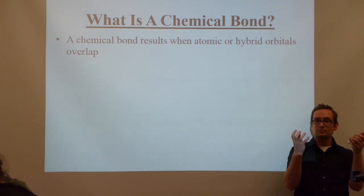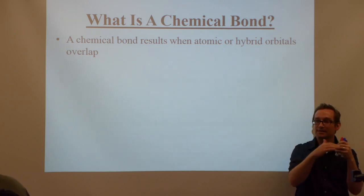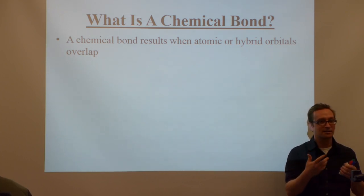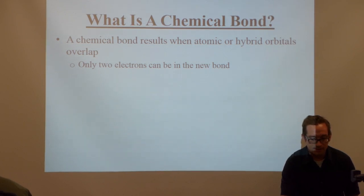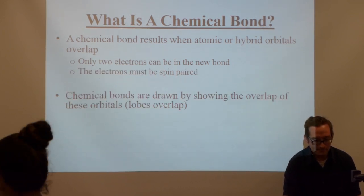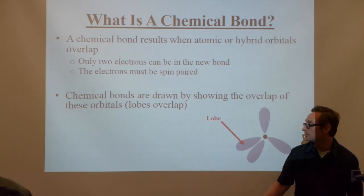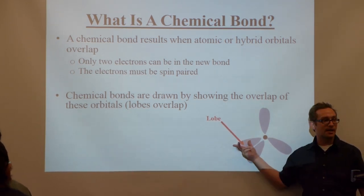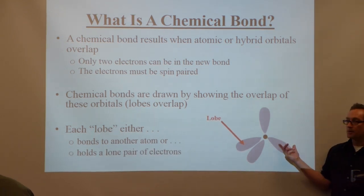Imagine not just two balls of charge being shared between two nuclei, but two wave functions being shared — and you have to have orbital overlap. You have to have constructive interference of these wave functions overlapping so that you have a bonding hybrid orbital. Only two electrons can be in a new bond, and the electrons must be spin-paired. Chemical bonds are drawn by showing the overlap of these orbitals — the lobes overlap.